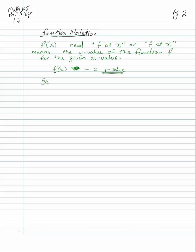For example, we can define a function where f(x) equals 3x plus 5. If I want to evaluate f(1), you just take the x out, put a 1 in, and do the math: 3(1) plus 5 equals 3 plus 5, which is 8. So f(1) is 8. The ordered pair that goes with this is (1, 8) — x is 1, and f(x), the y-value, equals 8.